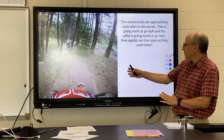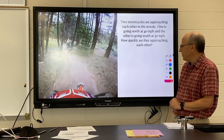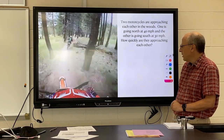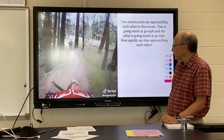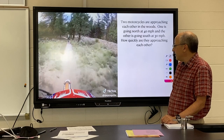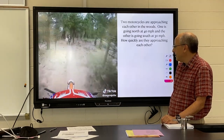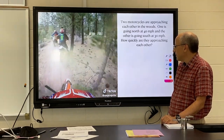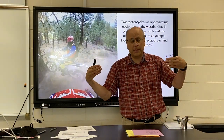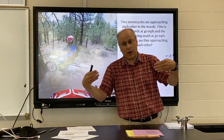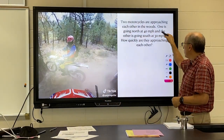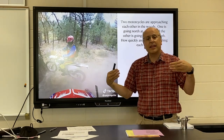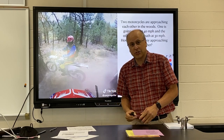Here we have an example where two guys are riding through the woods on a trail on their dirt bikes. At one point they're surprised by some other bikers and have to jam on their brakes to avoid a head-on collision. Had they collided, you would add their two speeds together — so if one is going 40 and one is going 30, that's like a 70 mile per hour collision. This is why head-on collisions are so dangerous.